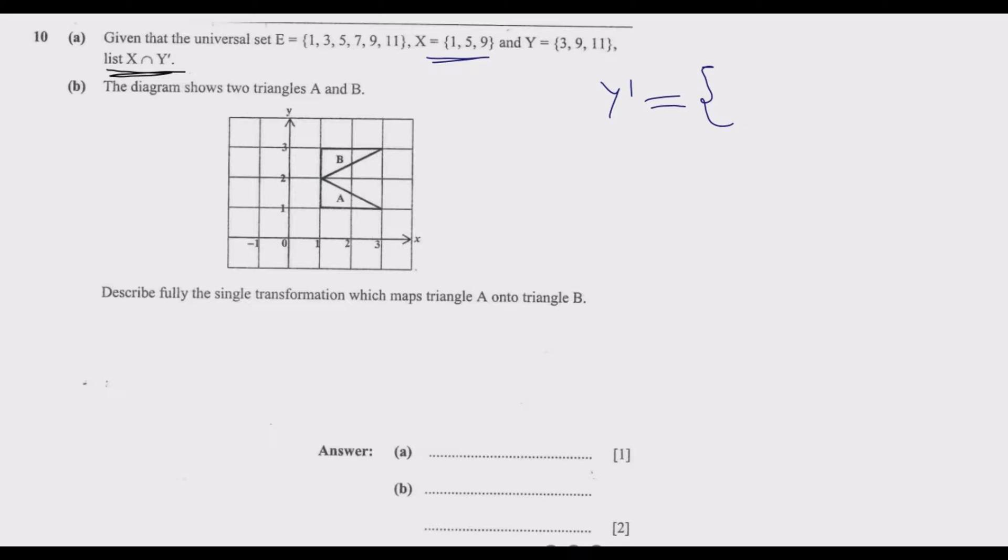Y contains {3, 9, 11}. Y complement means the elements found in the universal set E but not in Y. So from E we have 1 (yes, because 3 is in Y so 3 is left out), then 5, then 7, then 9 is in Y so it's out, then 11 is in Y. So we only have 3 elements: 1, 5, 7. These are the elements not found in set Y.